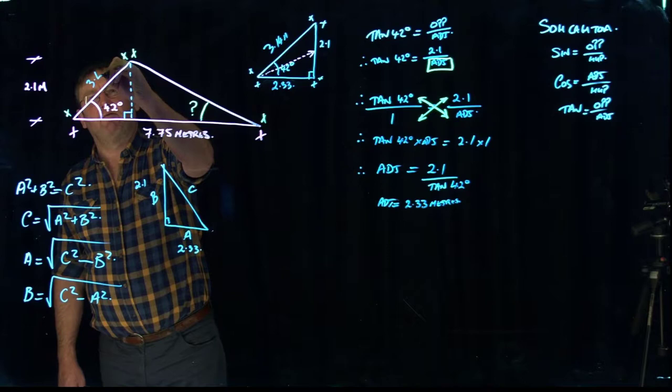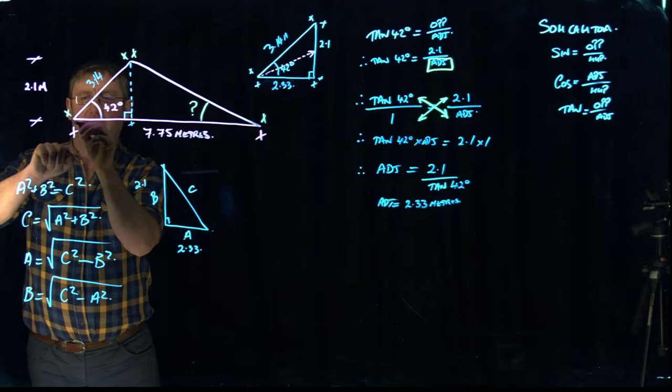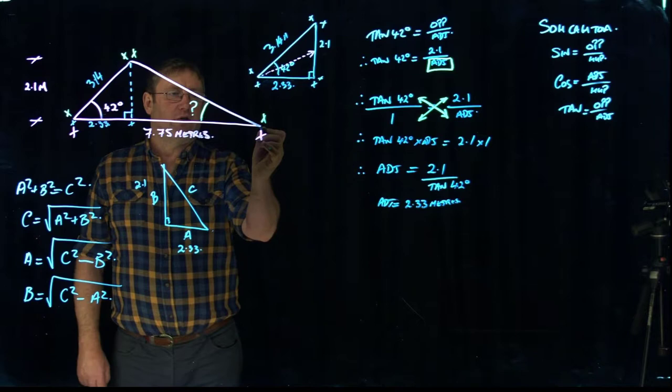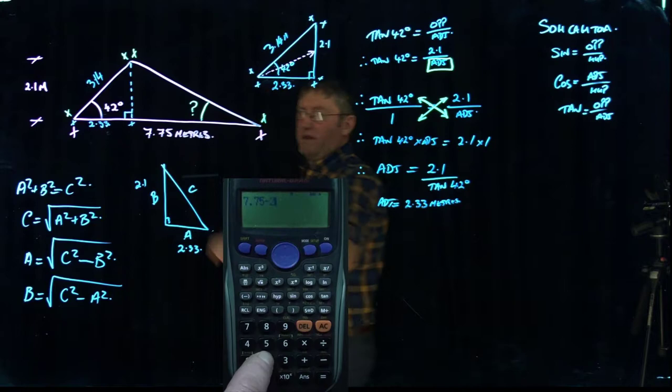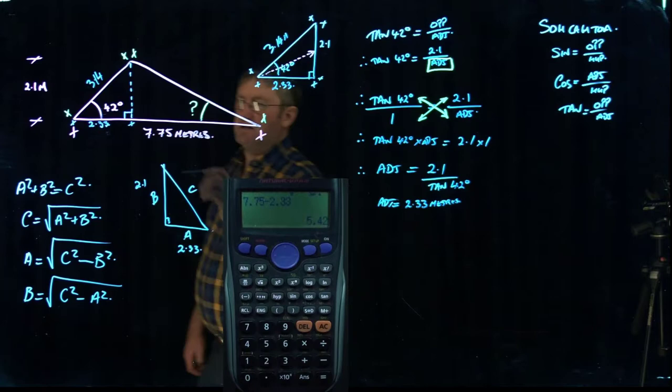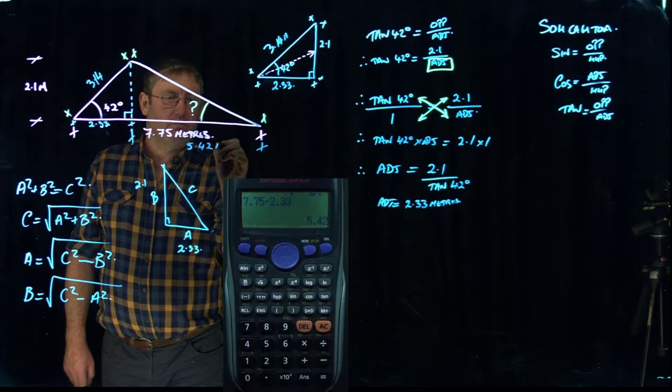And we know that this distance from this point here to this point here is 2.33. So immediately we can work out what the distance is across this side of the triangle. So we've got 7.75 minus 2.33 equals. And that distance from that point there across to that point there is 5.42 meters.